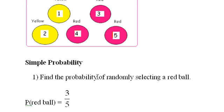Find the probability of randomly selecting a red ball. If we just close our eyes and reach in and grab a ball, what's the probability it's red? Well, there are five balls, so the size of our sample space is five. And three of them are red, so we put the three on top. The probability of getting a red ball is three over five, or 0.6.